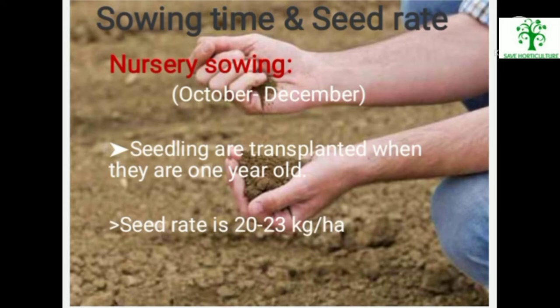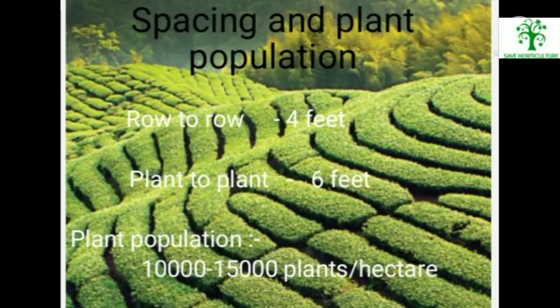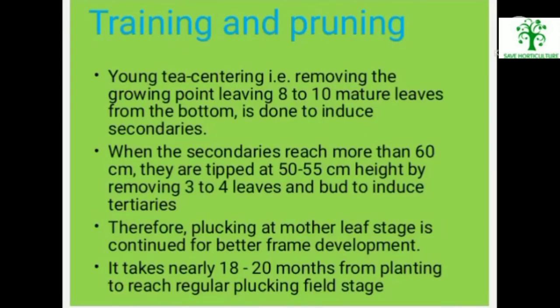Sowing time and seed rate. Nursery sowing: October to December. Seedlings are transplanted when they are one year old. Seed rate is 20 to 23 kg per hectare. Spacing and plant population: row-to-row spacing 4 feet, plant-to-plant spacing 6 feet, plant population 10,000 to 15,000 plants per hectare. Young tree centering: removing the growing points leaving 8 to 10 mature leaves from the bottom is done to induce secondary branches. When secondary branches reach more than 60 cm, they are tipped at 50 to 55 cm height by removing 3 to 4 leaves and bud to induce tertiaries.